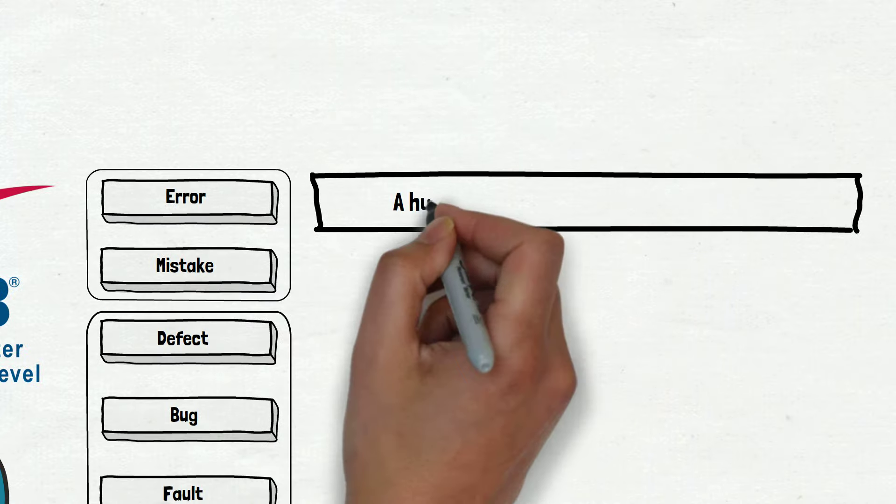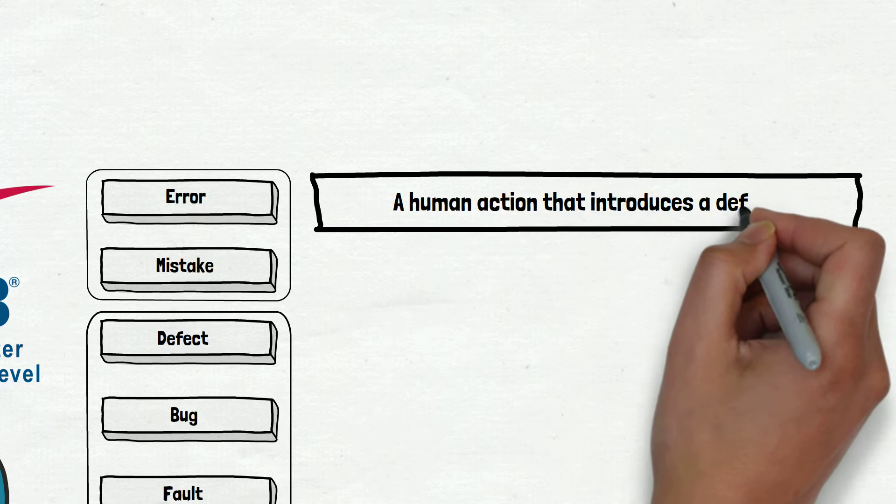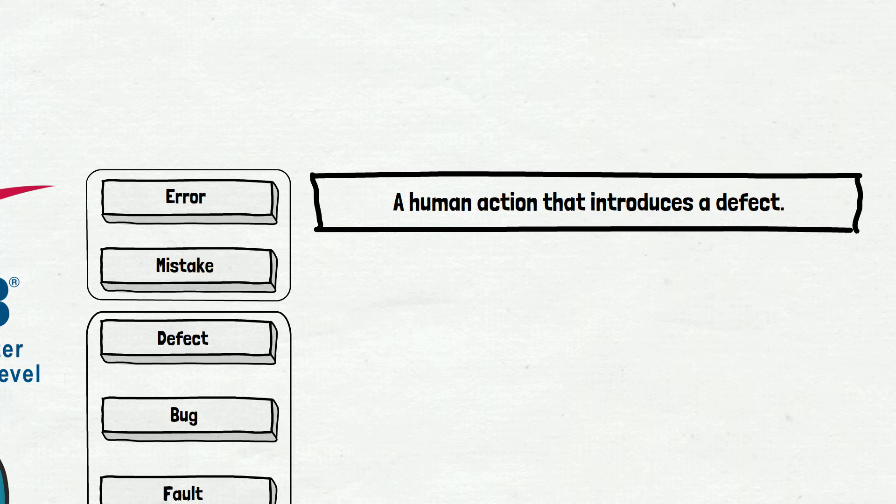Now, let's go back to the definition. We propose a small change. The error, in our opinion, is the human action that introduces a defect. This is not too different from the ISTQB definition, but it's easier to understand.